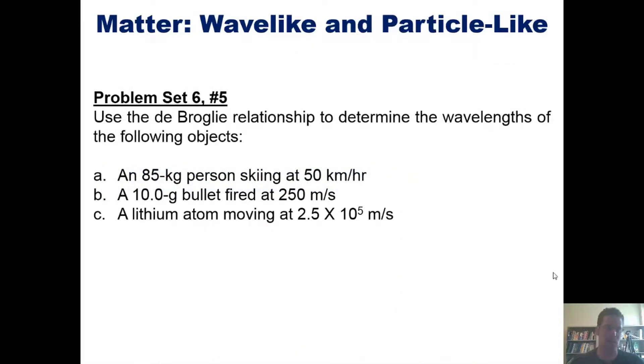That takes us to another set of problems. Use the de Broglie relationship to determine the wavelengths of the following objects: an 85-kilogram person skiing at 50 km/hr, a 10-gram bullet fired at 250 m/s, or a lithium atom moving at 2.5 times 10^5 m/s. Once again, I'm not going to answer those in this video, but we'll post a link here somewhere on the screen that you can click on to take you to a separate video in which I work these out.